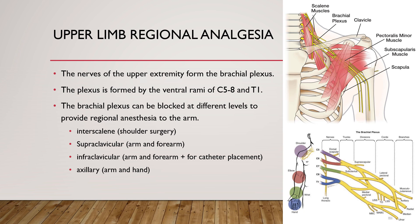We can block the brachial plexus at different levels to provide regional anesthesia to the arm. Interscalene is typically used for shoulder and more proximal surgery. Supra- and infraclavicular approaches are used for arm and forearm surgery, and axillary for the forearm and hand. We can also do more distal elbow and wrist blocks for specific nerves to improve a patchy brachial plexus block. The block name is based on where you insert the needle — interscalene is between the two scalene muscles, supraclavicular is above the clavicle, infraclavicular is under the clavicle, and axillary is just beyond the axillary line.